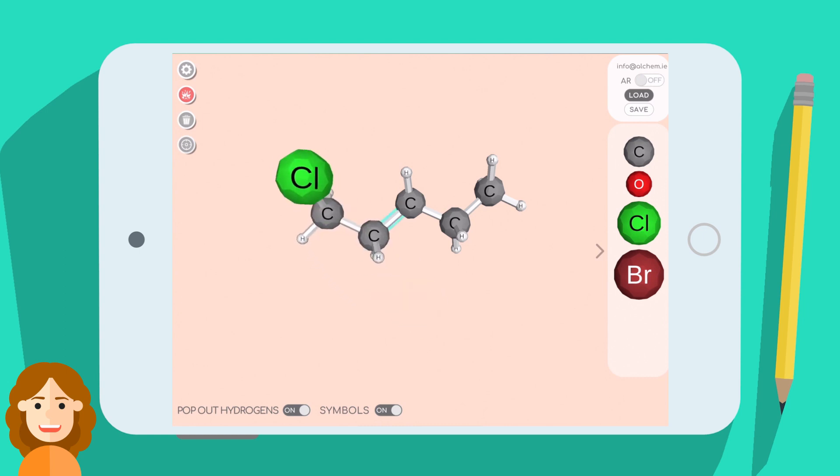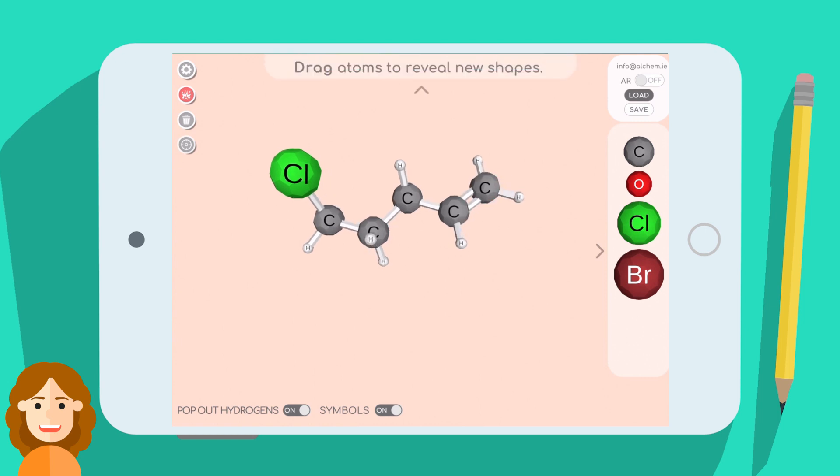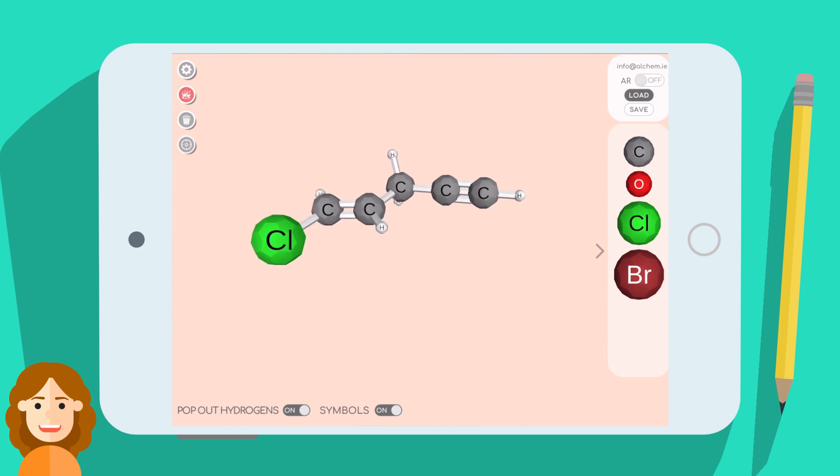To make double and triple bonds, first select an atom, then drag from that atom to another. As you form the bonds, you can watch as the geometry of those atoms changes.